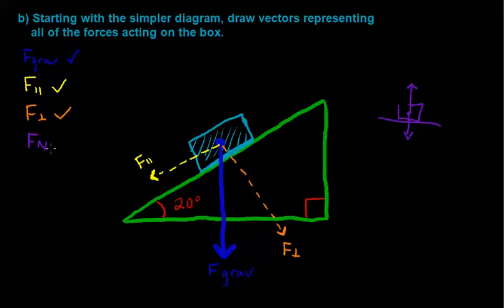Our normal force acting against the box in the direction upward from the surface of the ramp has to be our normal force, and it should be equal in magnitude to the perpendicular force.